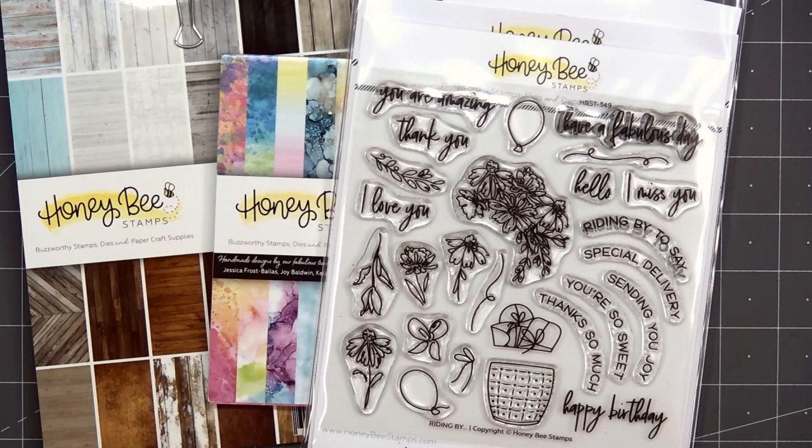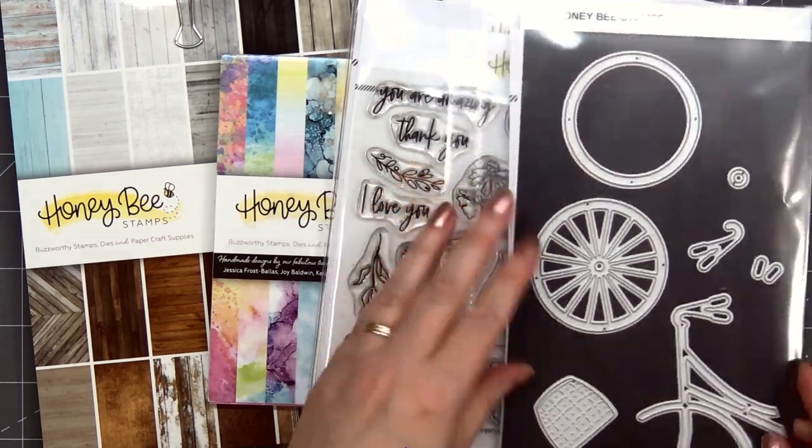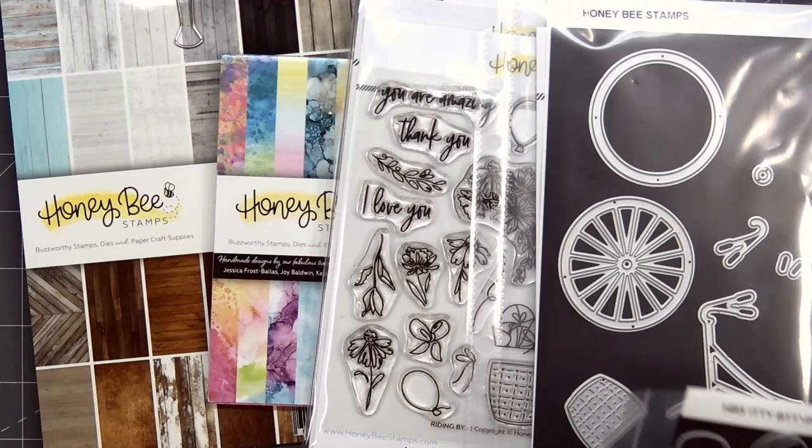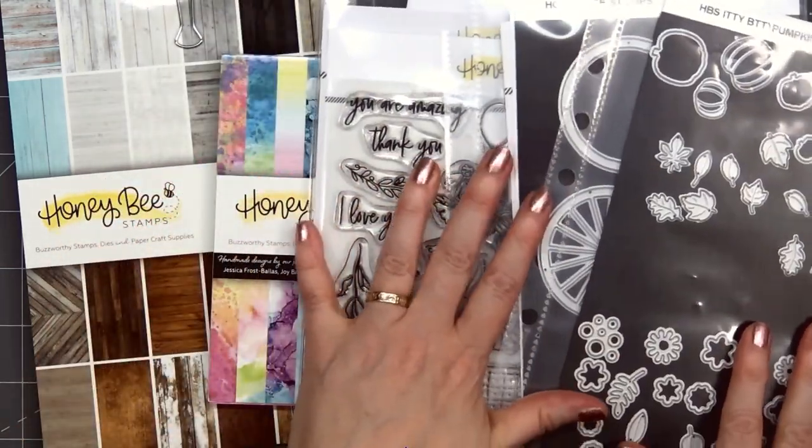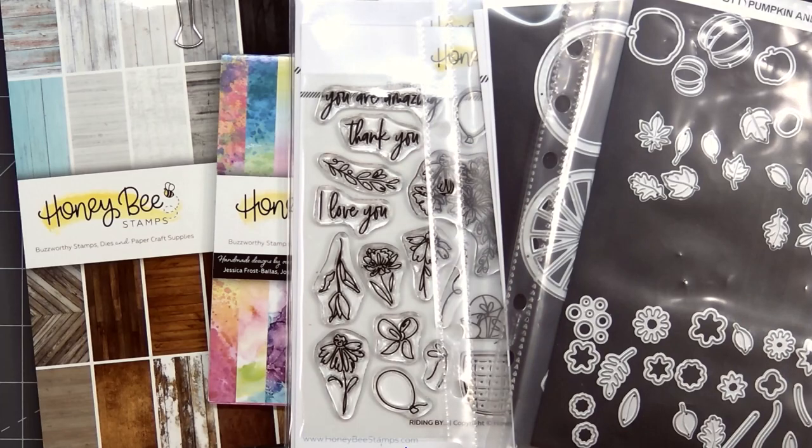For stamps I'm using Riding By. I have the stamps and coordinating Honeycut dies. Then I'll also be using the Bicycle Builder and the Itty Bitty Fall Flower die sets.